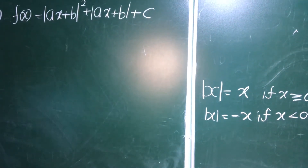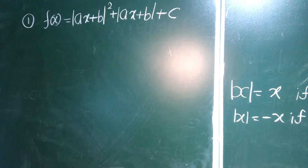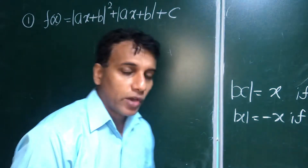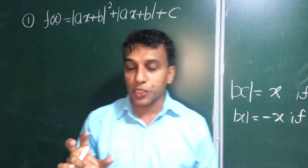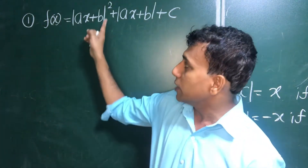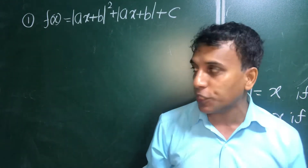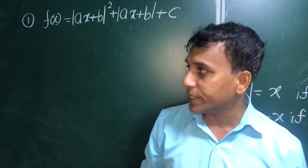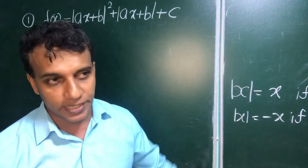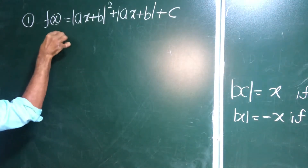We have two quadratic equations in this question, and there is a modulus symbol. For every modulus, there is a positive case and a negative case. That means ax plus b is completely positive — write it as is — or it is negative, so put an extra minus and write it. Therefore we take two cases.